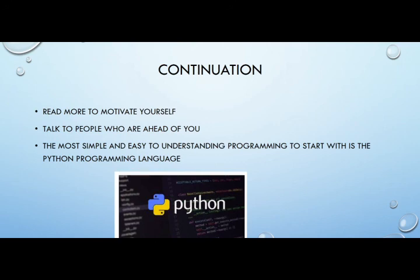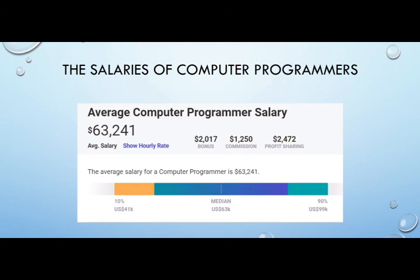Subscribe so you don't miss any video. The average computer programmer salary is $63,241. The minimum is $41,000, the median is $63,000, and the maximum is $99,000. You should learn how to program because it makes you happy, you can create things, you can be the inventor of new things, and you can be very successful. Programming is something very nice and you should learn how to do it. Thank you very much — this is the end of my presentation.